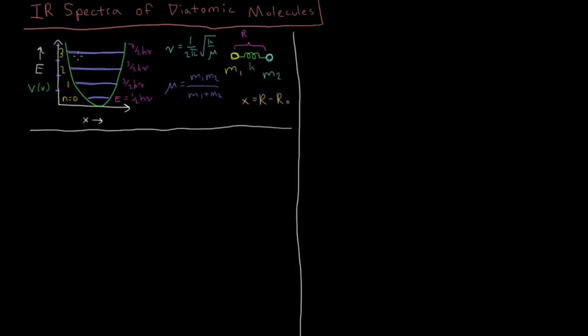In the previous couple videos, we've looked at the harmonic oscillator as a model system for a vibrating chemical bond. We've got two masses here, mass 1 and mass 2 of each of the atoms. They're connected by some spring with a spring constant k, and they have some distance apart, which is r. And the spatial coordinate we're interested in is the displacement from the equilibrium bond distance, this x equals r minus r0.